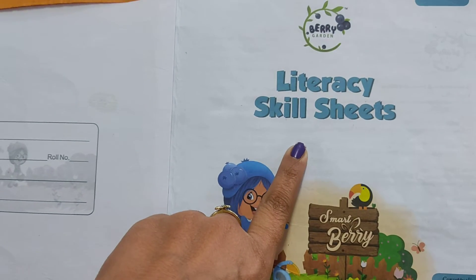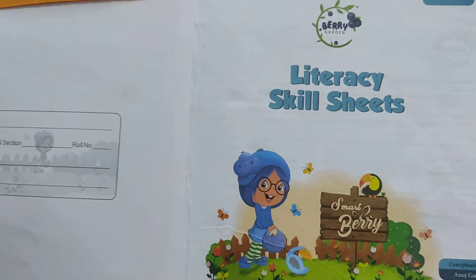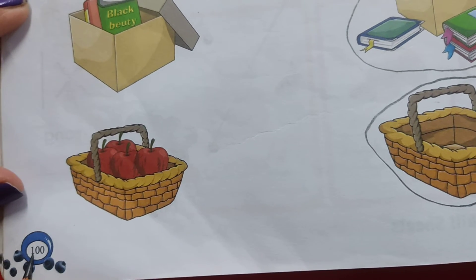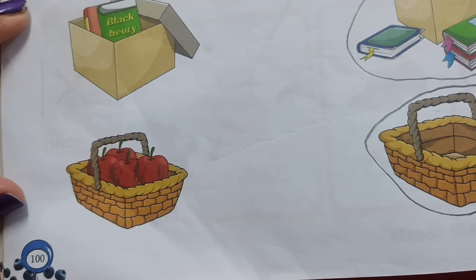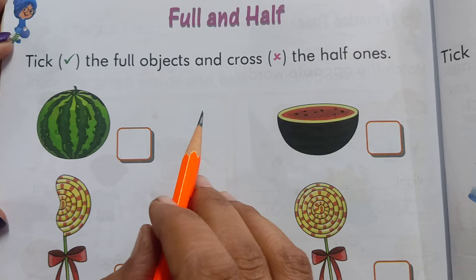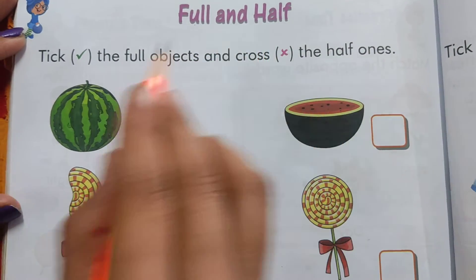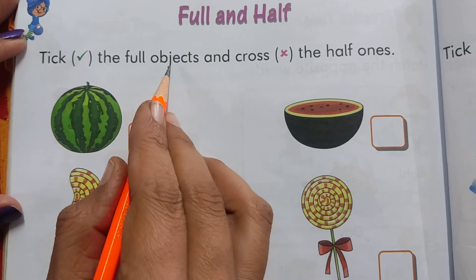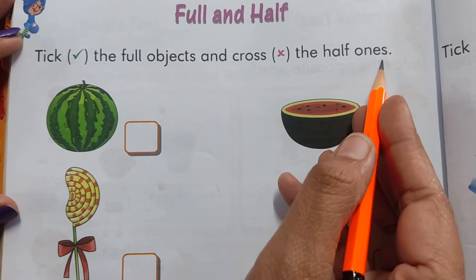Now kids, take out literacy skill sheet textbook, page number 100. So kids, our topic is full and half. Tick the full objects and cross the half objects.